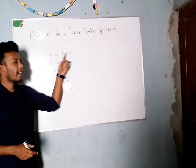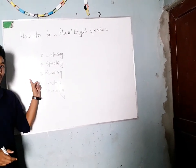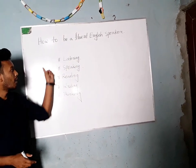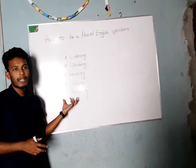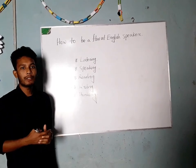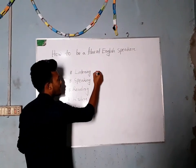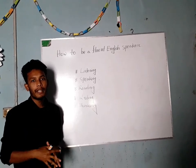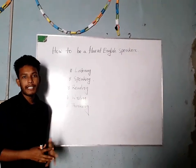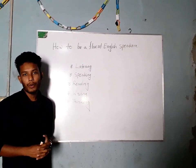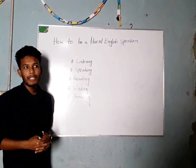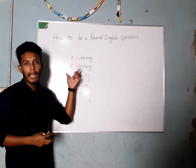First I have written 'listening', second is 'speaking', third is 'reading', fourth is 'writing', and the last one is 'thinking'. If you really want to develop your spoken English, you have to follow these five areas. Listening is the most significant for spoken English. You know our mother tongue is Bangla, so we are learning English as a second language — that's why you have to listen more and more.